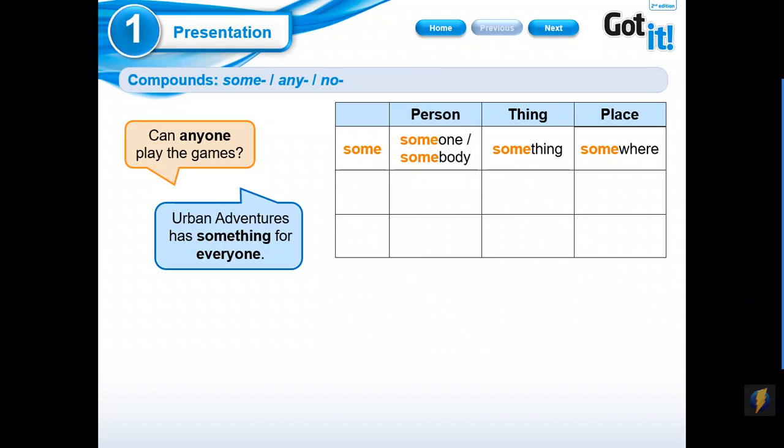We have ANY. ANY with PERSON that is represented by ONE or BODY, it's going to be ANYONE or ANYBODY. With THING, ANYTHING. And PLACE, or WHERE, ANYWHERE.